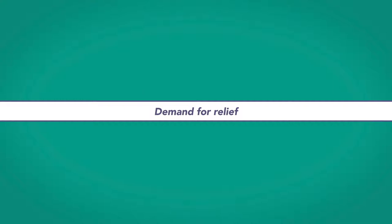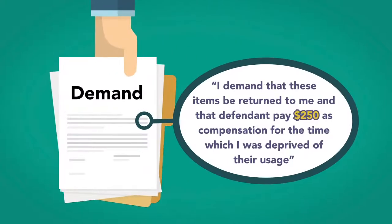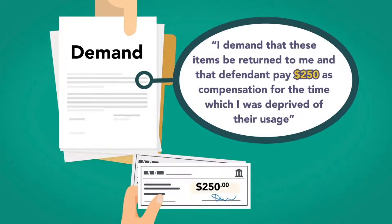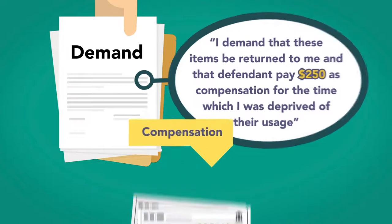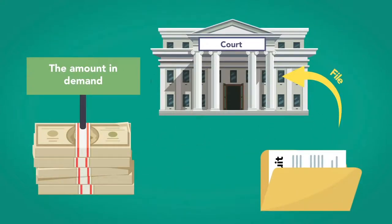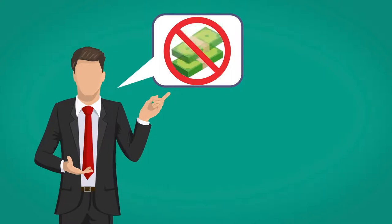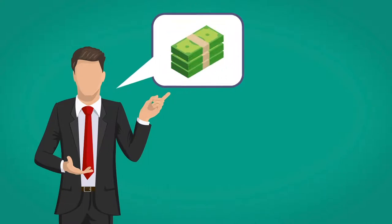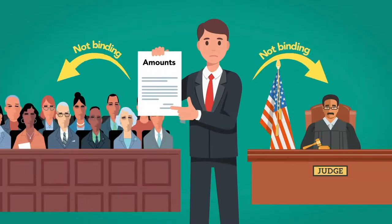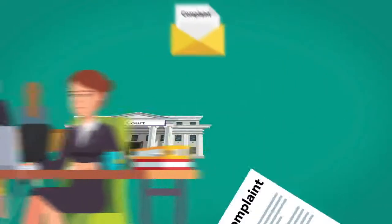Demand for relief. In the demand, you ask for relief. For example: 'I demand that these items be returned to me and that the defendant pay $250 as compensation for the time which I was deprived of their use.' The amount in demand might determine in what court you file the case, such as whether a case may be filed in small claims court or whether there is federal diversity jurisdiction. But it is often not necessary to state the dollar amount demanded. In any case, listed amounts are not binding on judges or juries deciding the case. Then the complaint is signed, filed with the court, and served.